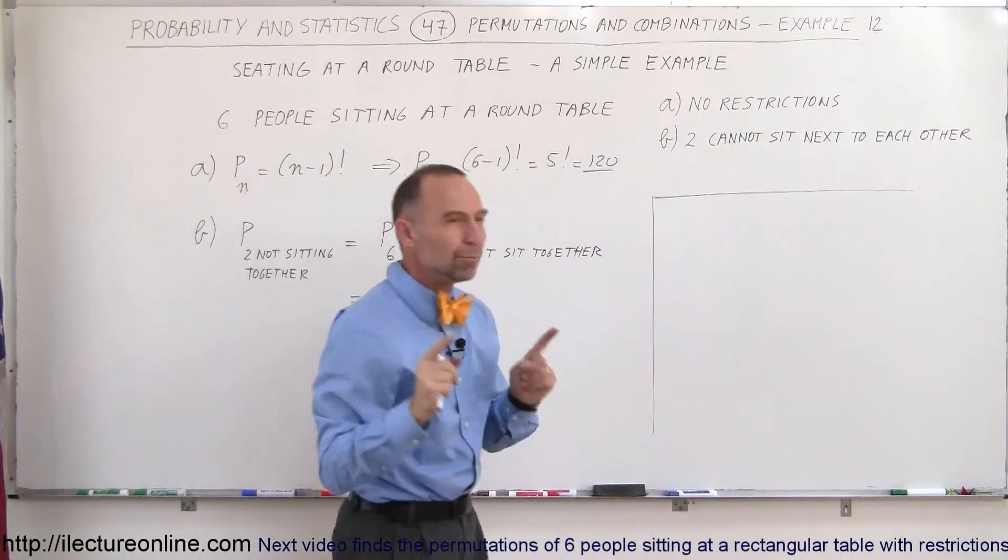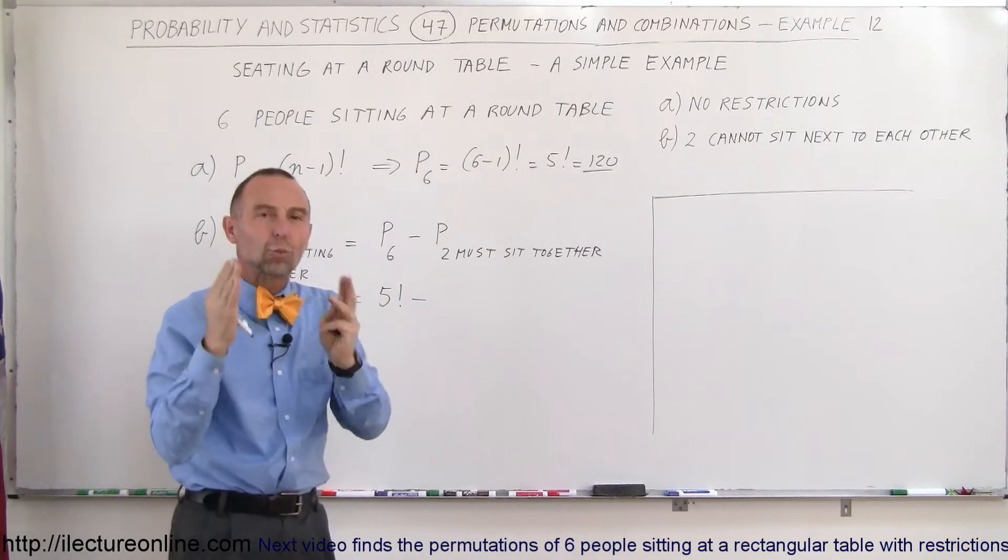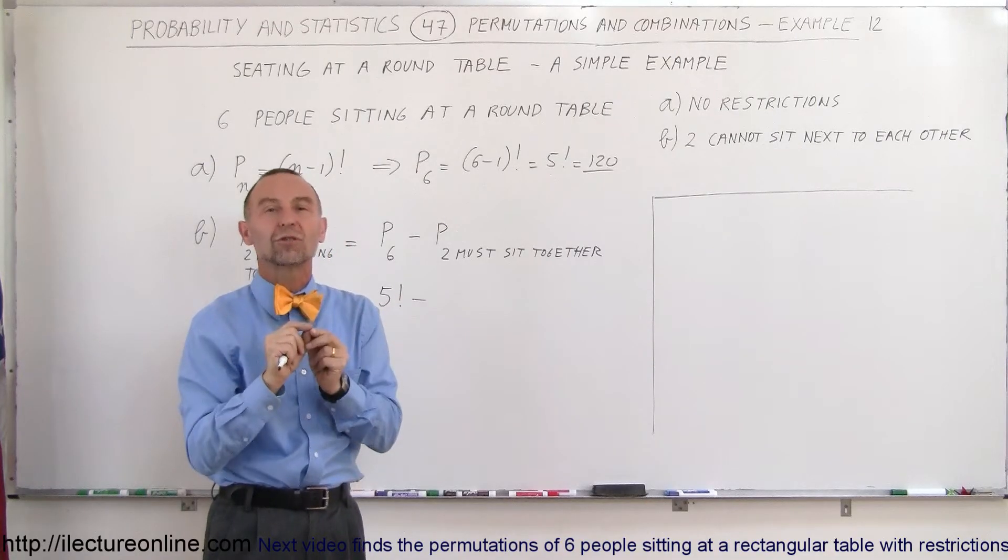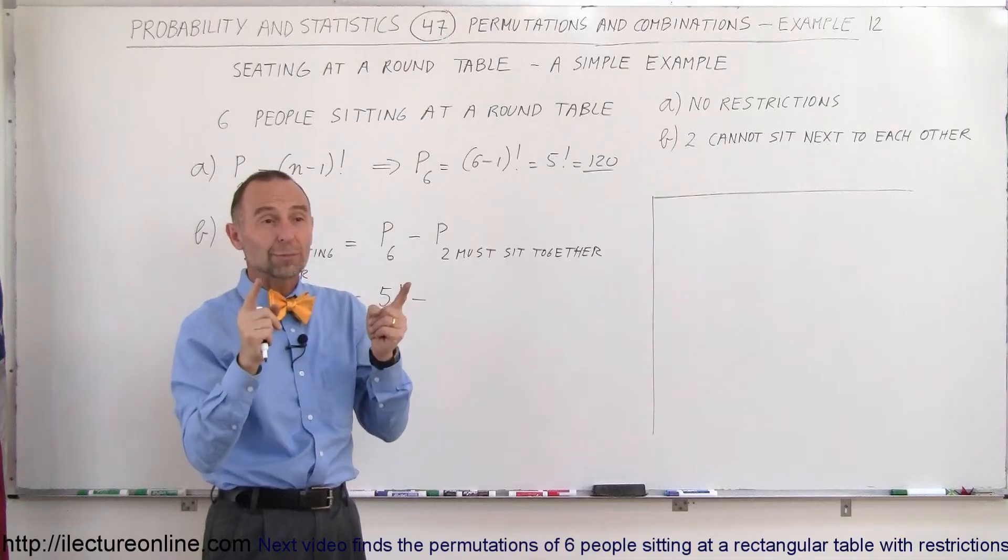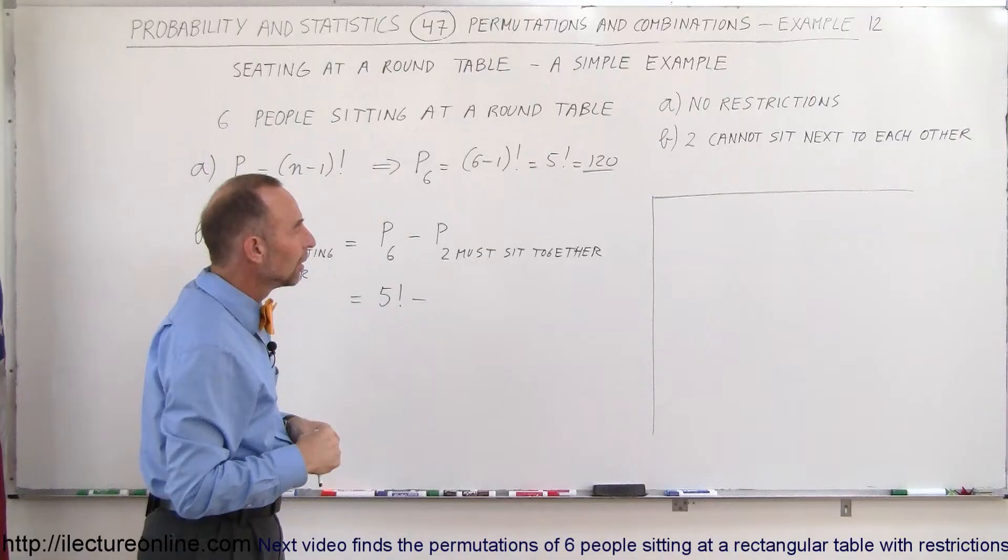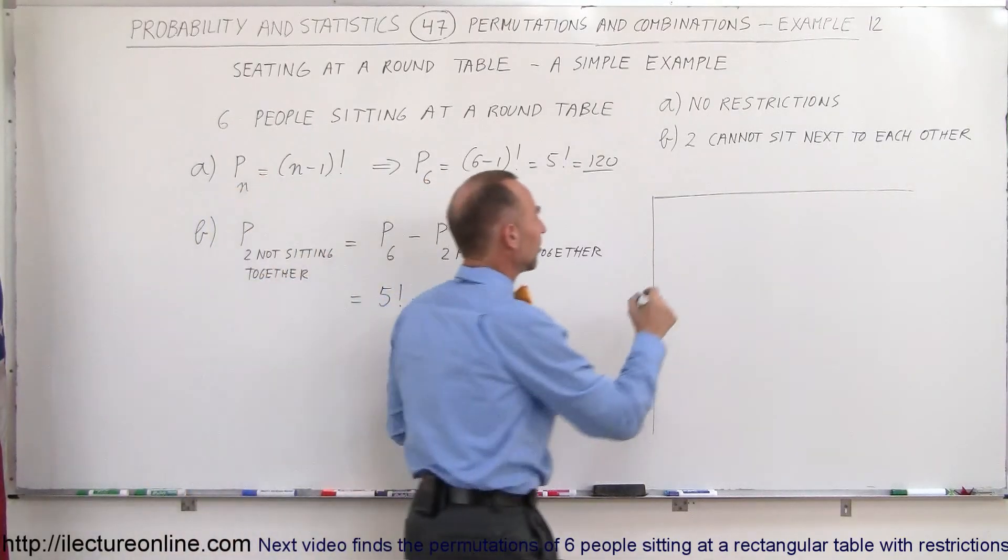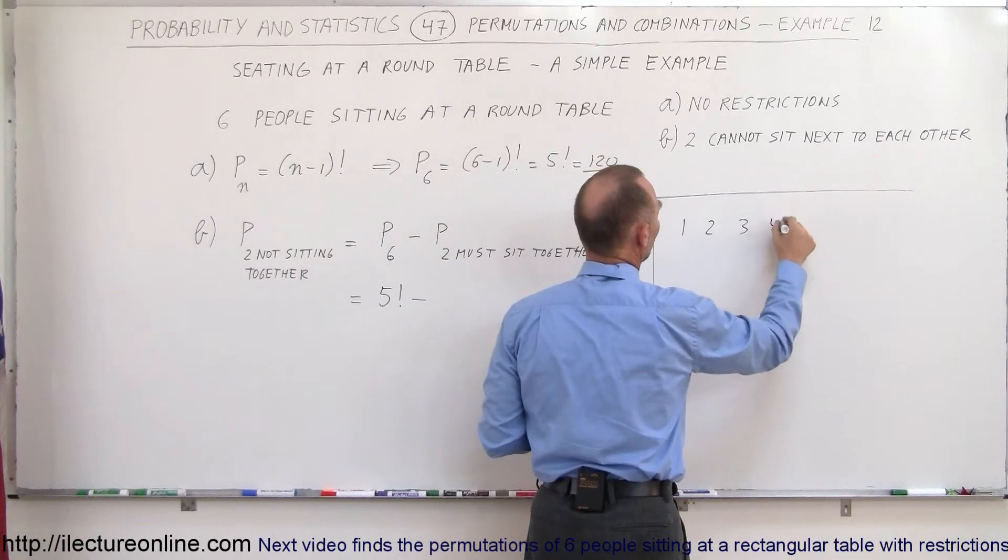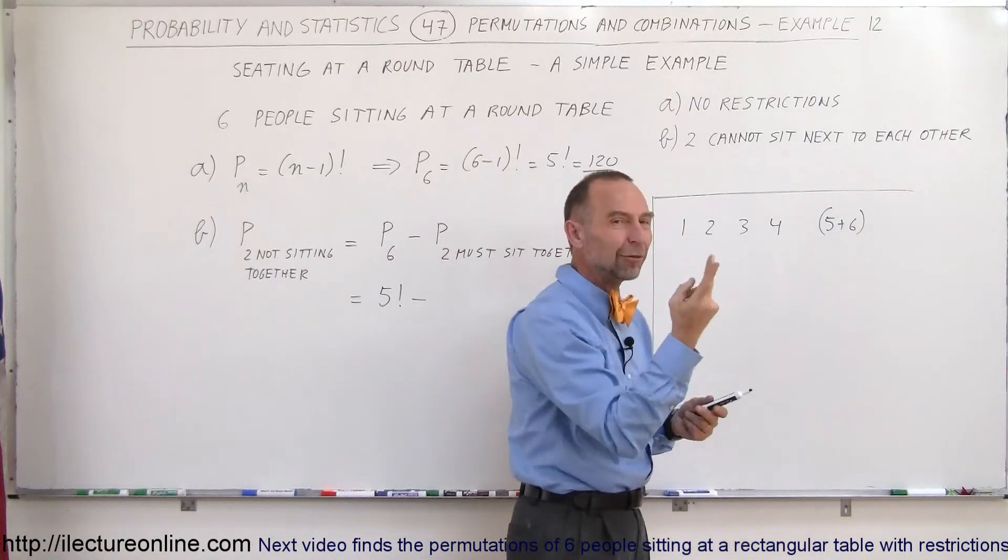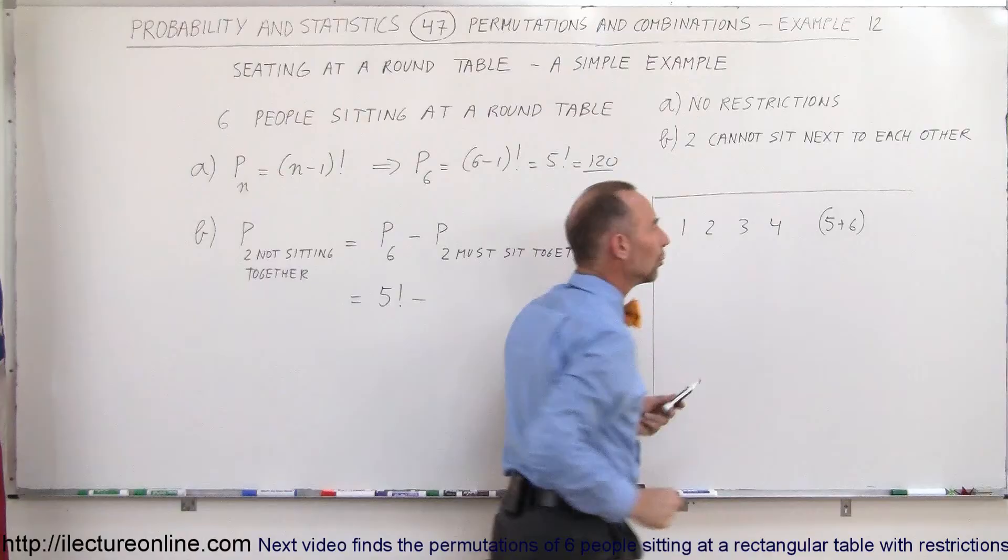So the case is when two people must sit together, that's the condition here. Then they become as one unit, not just a simple one unit, because then they can rearrange position among themselves as well. So there's actually two ways in which two people can sit together, to the left of one or to the right of one. So that means if there's an equivalent of this, let's say you have one, two, three and four people, and let's say five plus six are together, they act as one person.